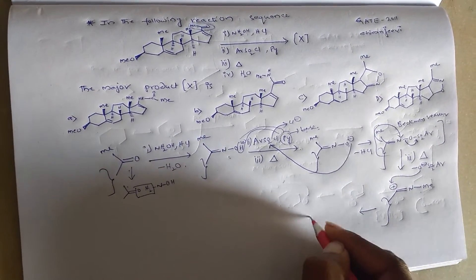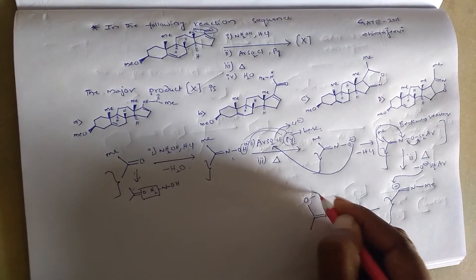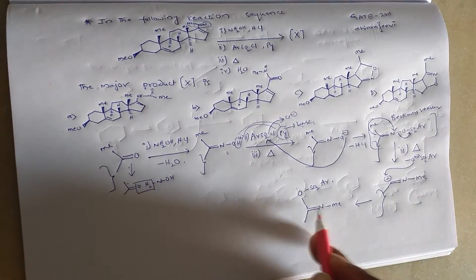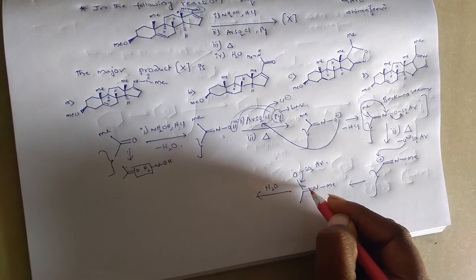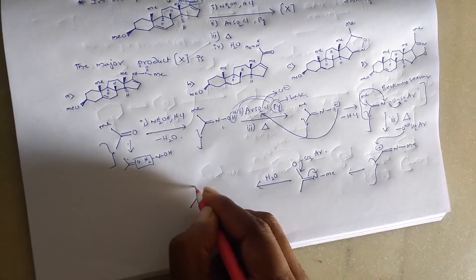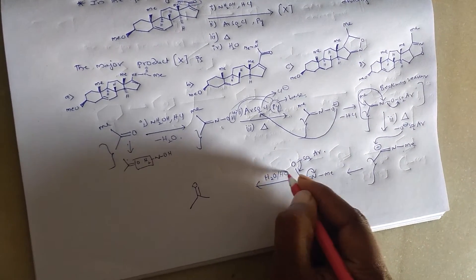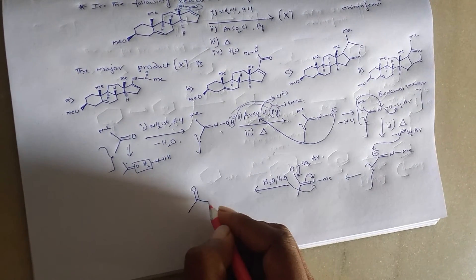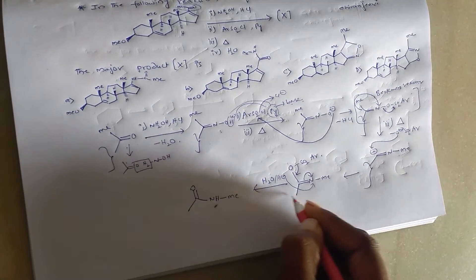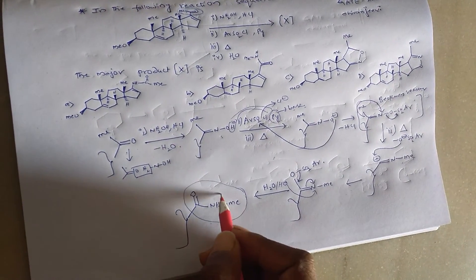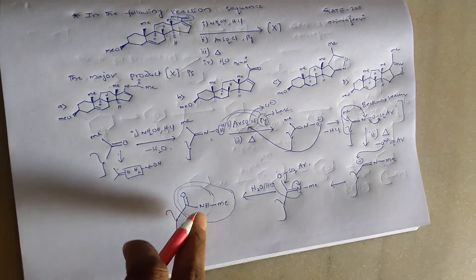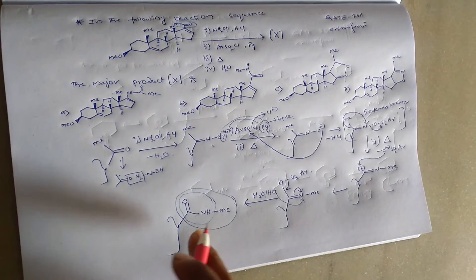So we are going to get this compound. Further hydrolysis takes place — the double bond goes to the nitrogen, and H⁺ adds onto the nitrogen. So this is the final product. That means the carbonyl group transforms into an amide functional group. We should observe this amide functional group in the given options — if it is there, that is the answer.